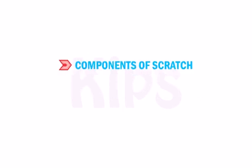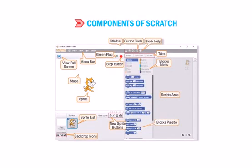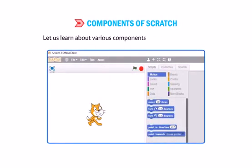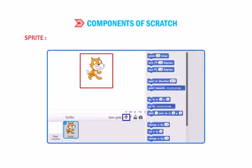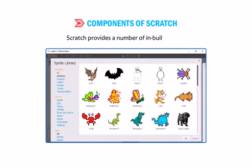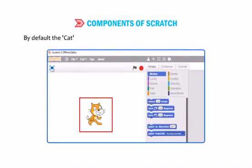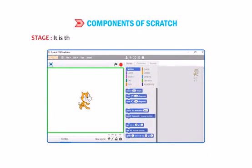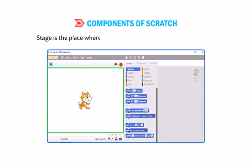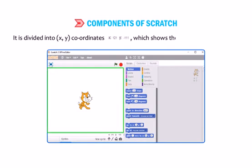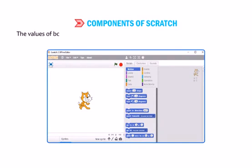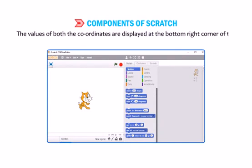Let us learn about various components of the Scratch window. Sprites are objects that perform various actions in a Scratch project. Scratch provides a number of inbuilt sprites. By default, the cat sprite is selected and displayed in the middle of the stage. The stage is the main working area to draw pictures or perform actions. Sprites move and interact with each other on the stage. It is divided into X and Y coordinates, which show the position of the mouse. The values of both coordinates are displayed at the bottom right corner of the stage.